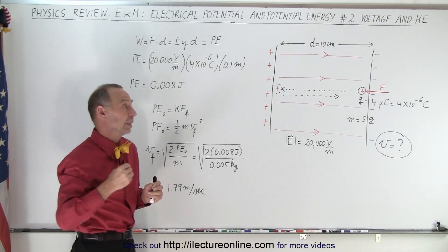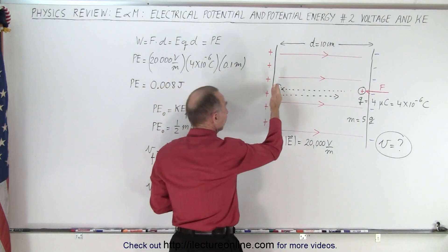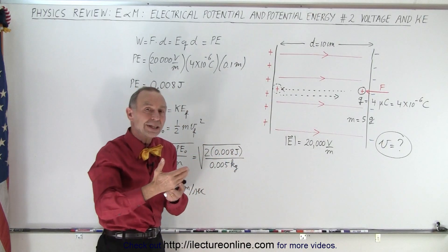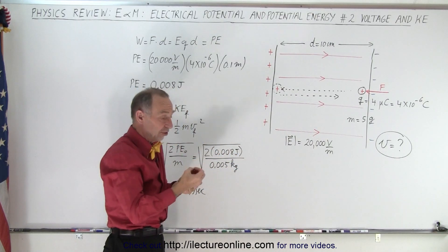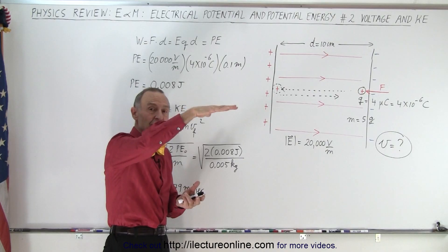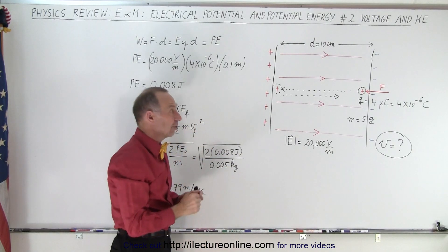Now what happens when we let go? Well, when we let go, the electric field will then push the charge back to the other side. It will lose potential energy and gain kinetic energy, just the same as if you were to drop an object, it falls to the floor. So it loses potential energy and gains kinetic energy.